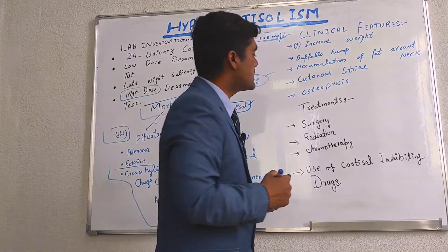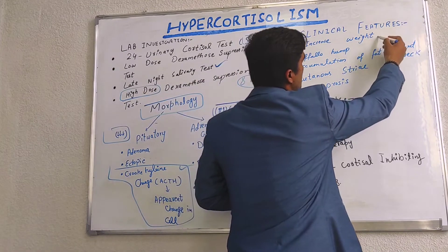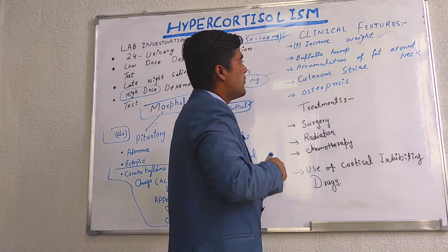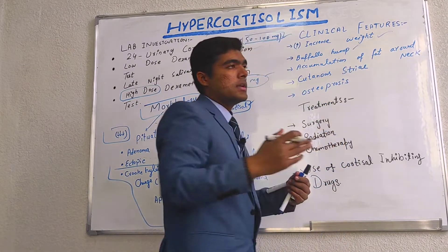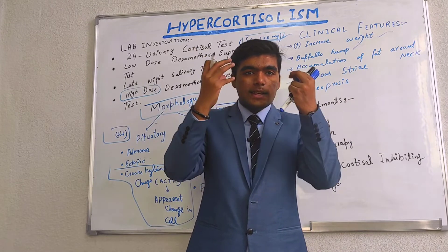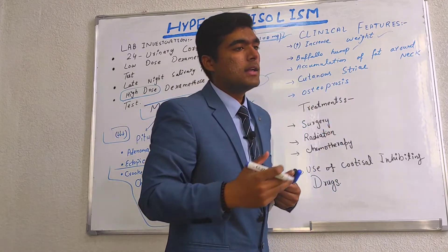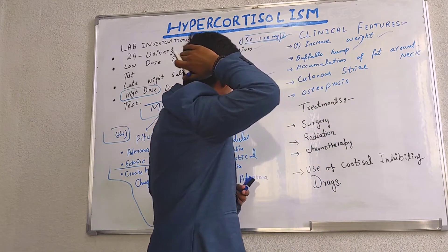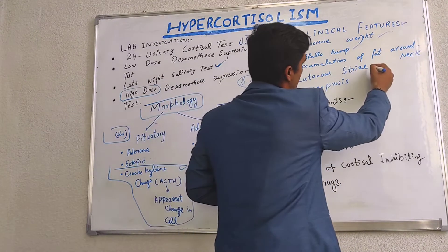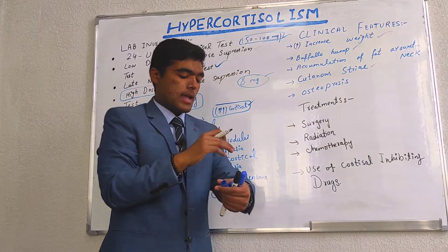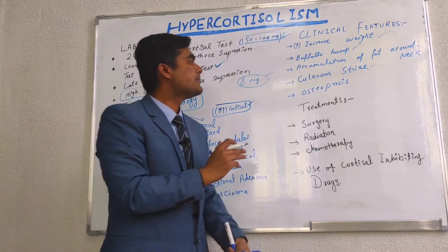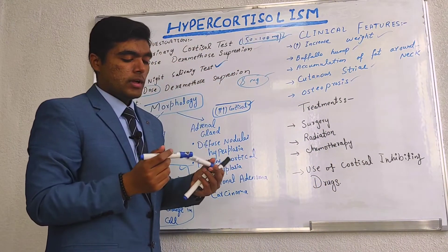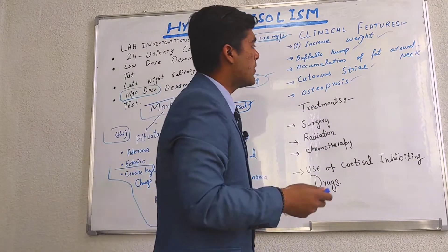The clinical features include increased weight and excess fat production. There is a buffalo hump with fat accumulation around the cheeks and neck. Cutaneous striae appear, meaning changes in skin color and skin texture. Osteoporosis also develops.